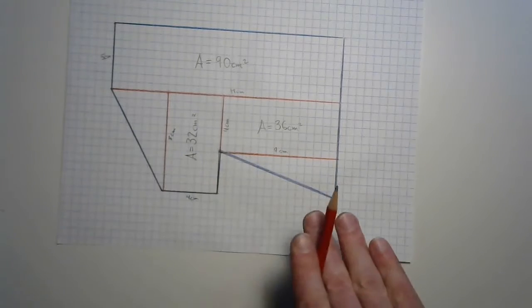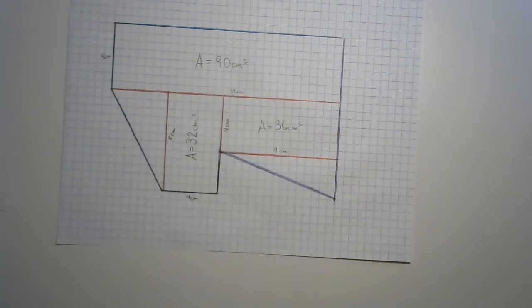So now we're left with these two triangles. And do you remember the area of a triangle? What is that formula? Half base times height. So let's measure those bases and let's measure those heights.